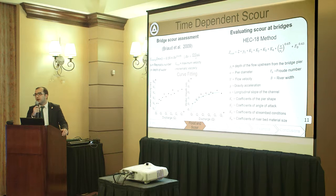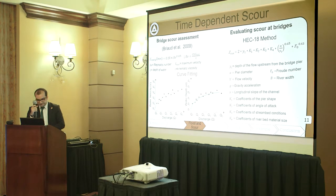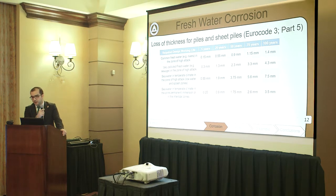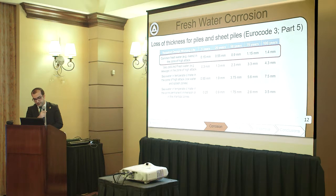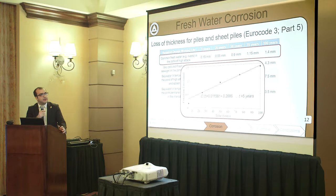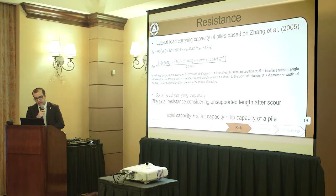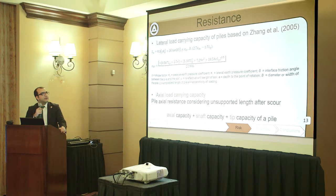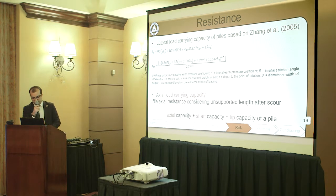For corrosion assessment, we use the fresh water corrosion loss model recommended by Eurocode 3, Part 5. The recommended data for fresh water is used to establish a time-dependent relationship of corrosion loss versus time. Both lateral load carrying capacity and axial load carrying capacity of the piles are considered. For lateral load carrying capacity, we use the Jenga model. For axial capacity, we use a standard procedure taking the summation of shaft capacity and tip capacity of the piles.